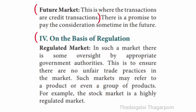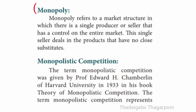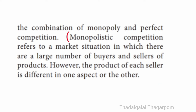On the basis of regulation: Regulated market — there is oversight by appropriate government authorities to ensure no unfair trade practices. Unregulated market — an absolutely free market with no oversight; market forces decide everything. On the basis of nature of competition: Monopoly — a market structure in which a single producer or seller controls the entire market. Monopolistic competition — a market situation in which there are a large number of buyers and sellers of differentiated products.